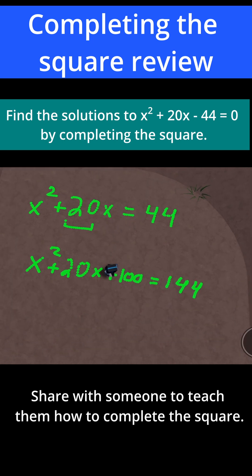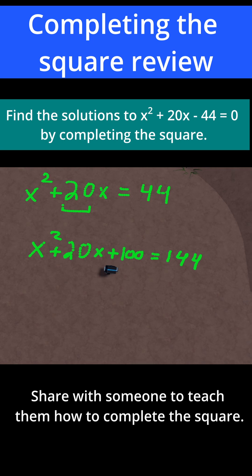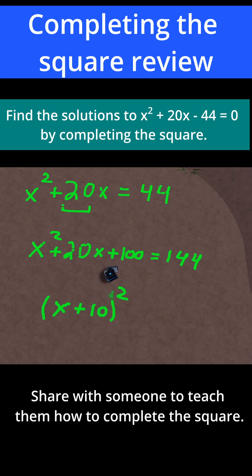Now let's factor the left side. x squared plus 20x plus 100 factors as x plus 10, squared. Just take the 20x and divide by 2 to get the 10 to put in the parentheses. And then that just equals 144.